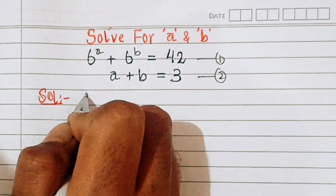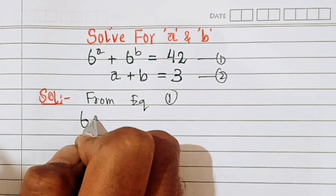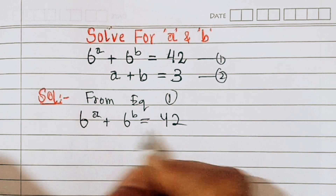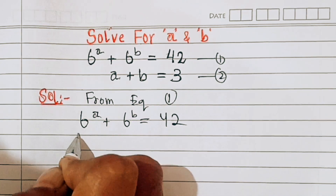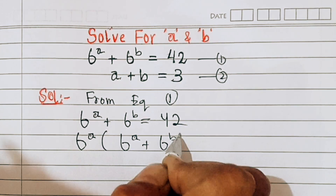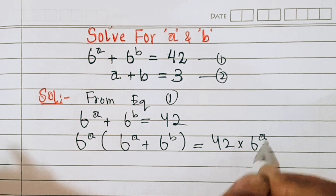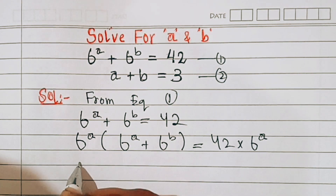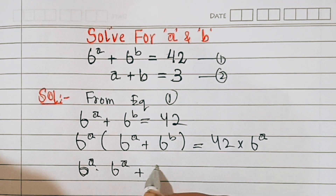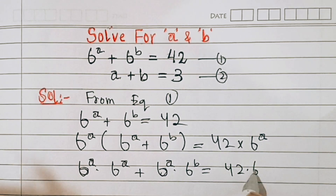So from equation one, we have 6 power a plus 6 power b equal to 42. Now let's multiply by 6 power a on both sides. So we have 6 power a times 6 power a plus 6 power a times 6 power b equal to 42 times 6 power a.